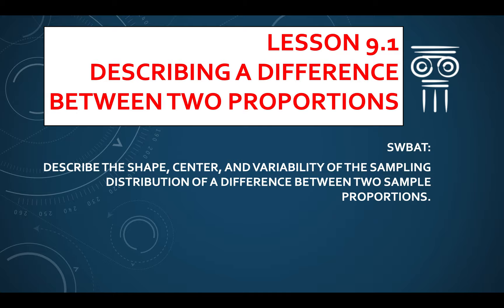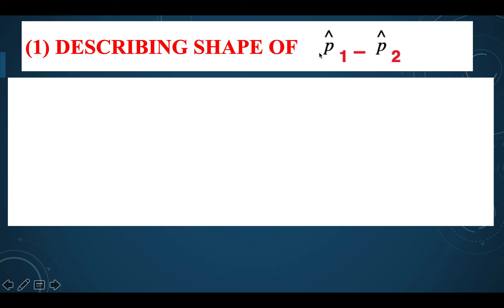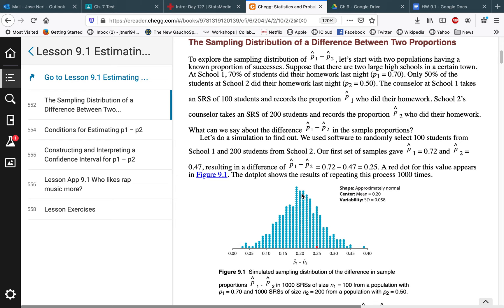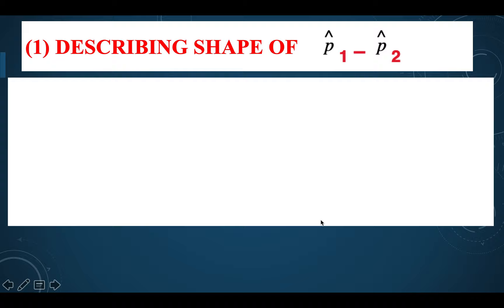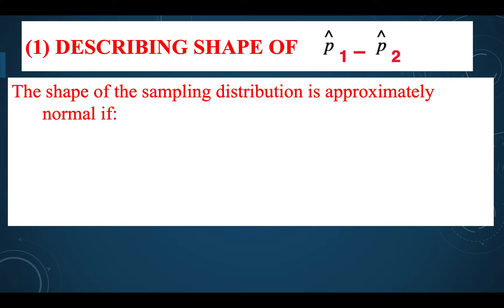Now let's describe the shape of p̂₁ minus p̂₂. In statistics we've seen four shapes: skewed right, skewed left, normal, and uniform. We're still going to be working with normal. To describe the shape of a sampling distribution and check that it's approximately normal, there are four conditions to verify.